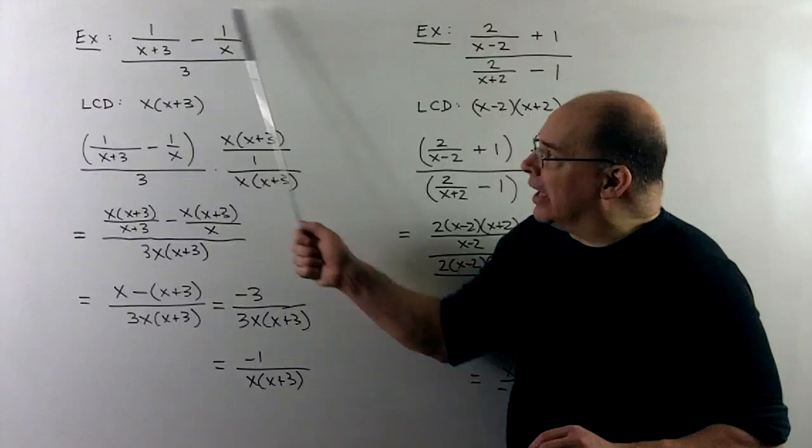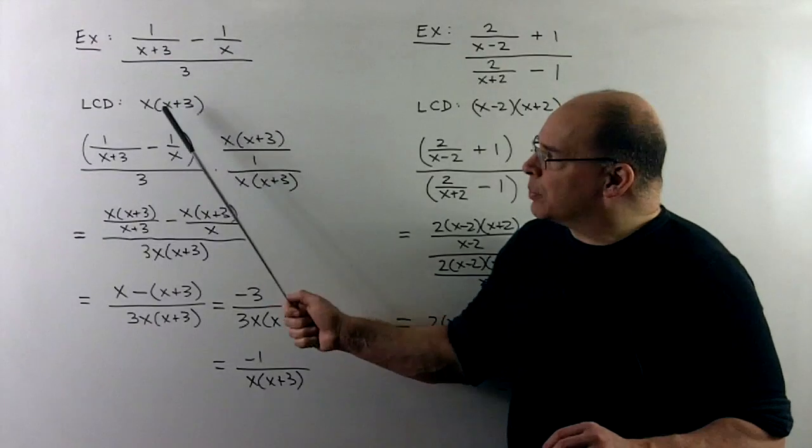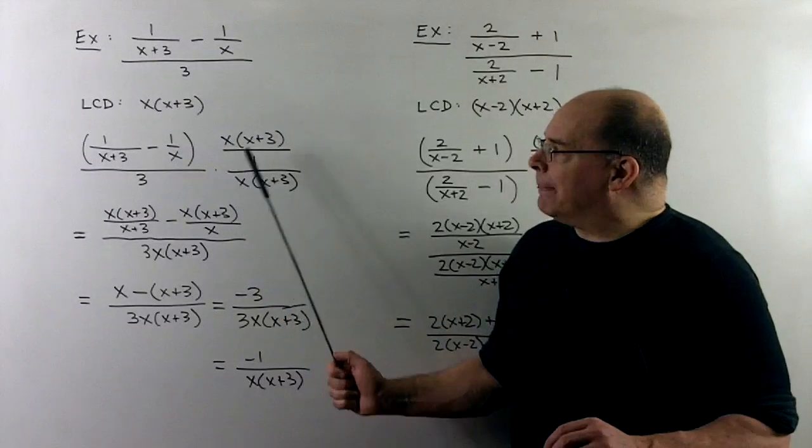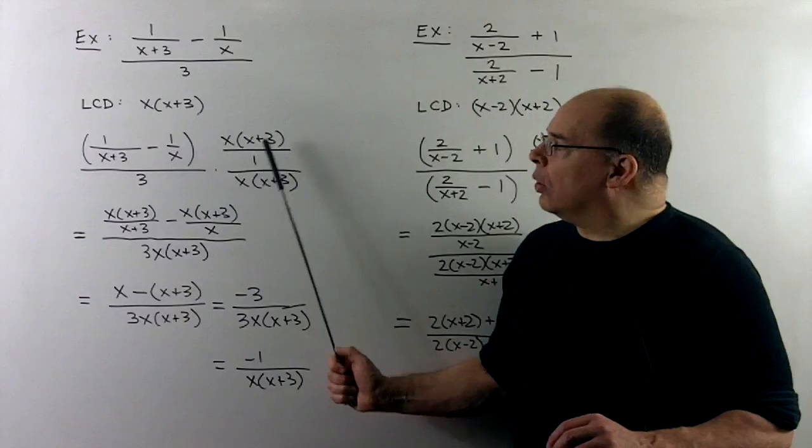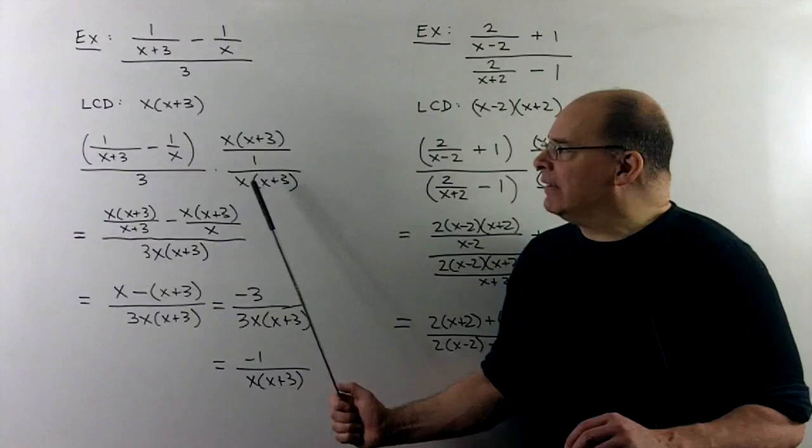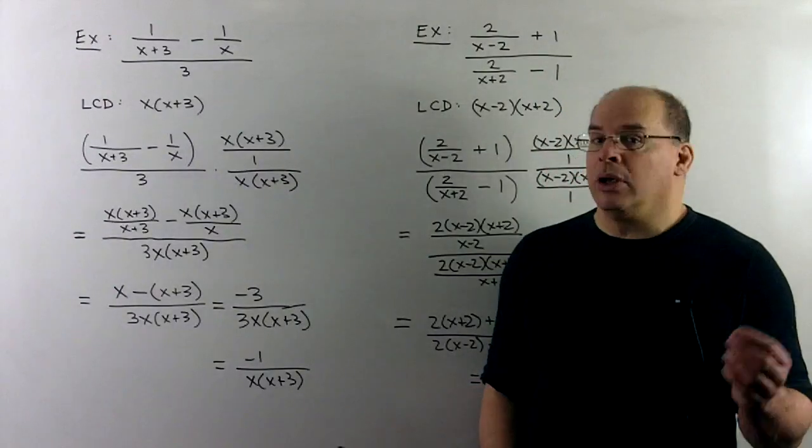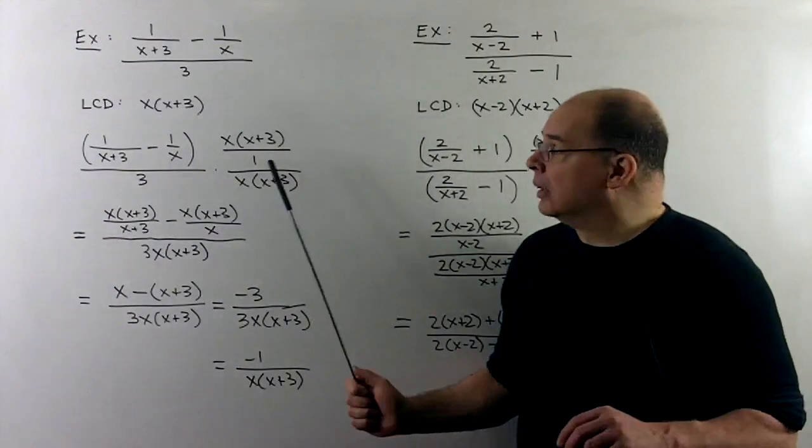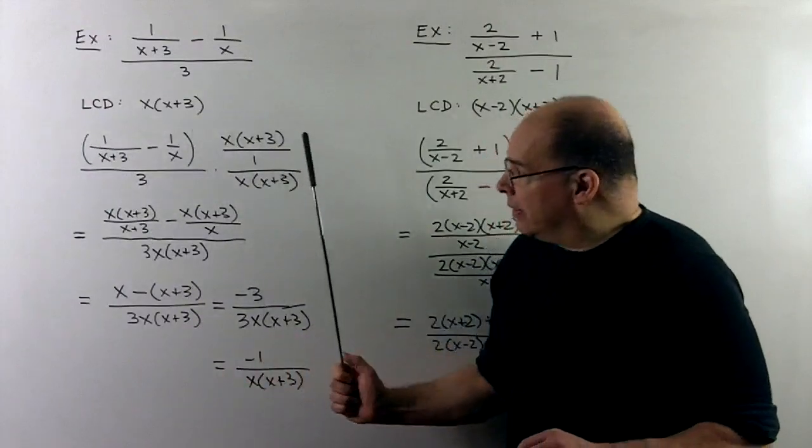Now we note, the LCD of the inner fractions is going to be x, x plus 3. We multiply by x, x plus 3 over 1 over itself. But since I'm only going to hit 3, I'm just going to leave it as x, x plus 3, not over 1.